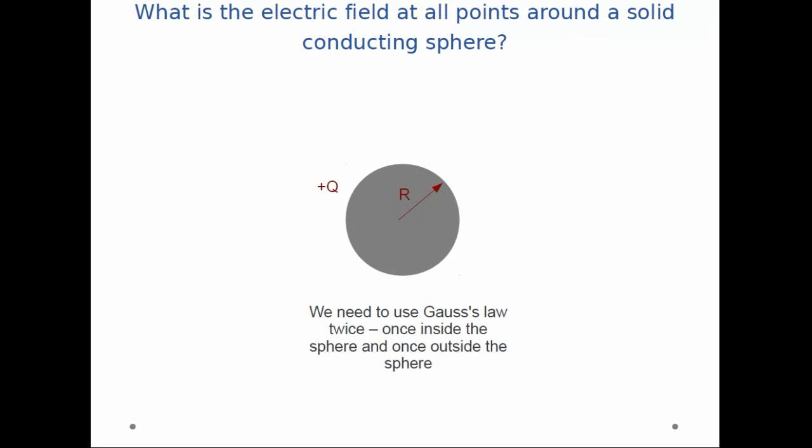So in this problem, if we want to find the field, we need to use Gauss's law twice. Once to find the field inside the sphere, once to find the field outside the sphere.